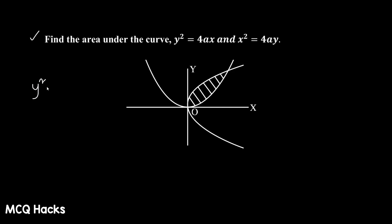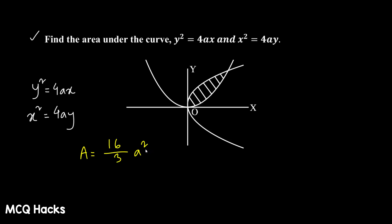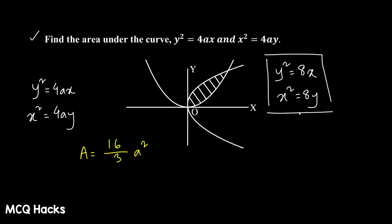I will find the integration using the method. You can do the curve where y² is greater than 4ax and x² equals 4ay. The answer to you is a equals 16/3 — a² is the same as the answer. If you remember the answer, for MCQ you should say: y² equals 8x and x² equals 8x. So this curve structure is your case structure.